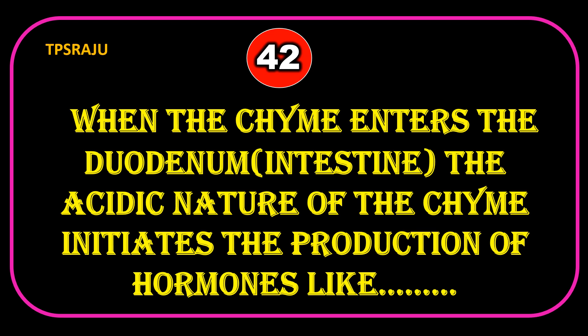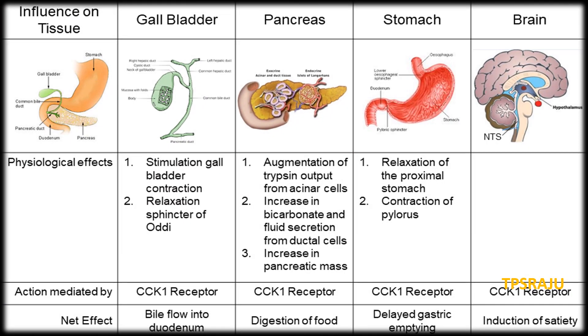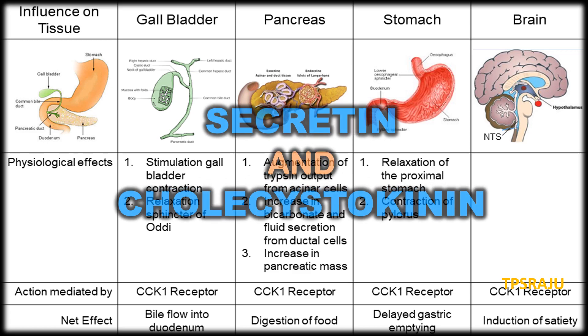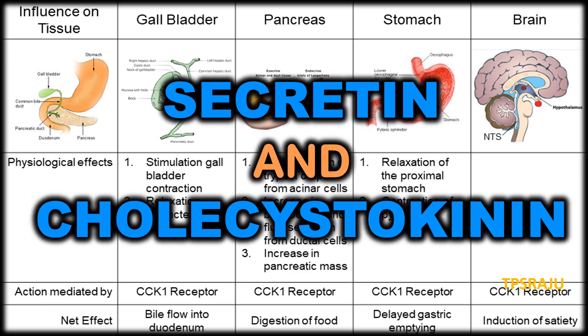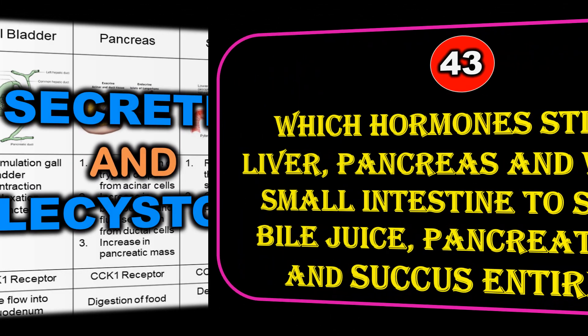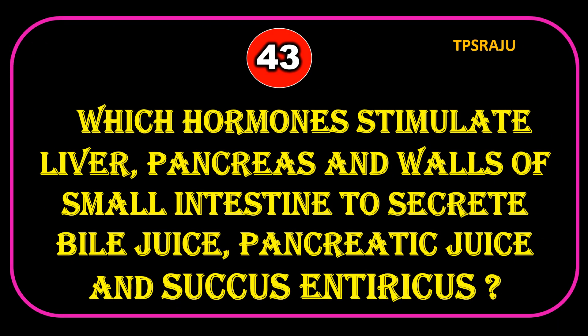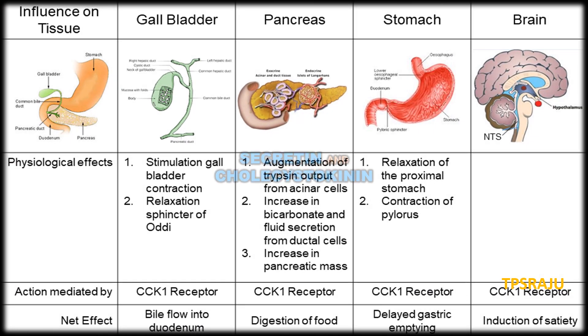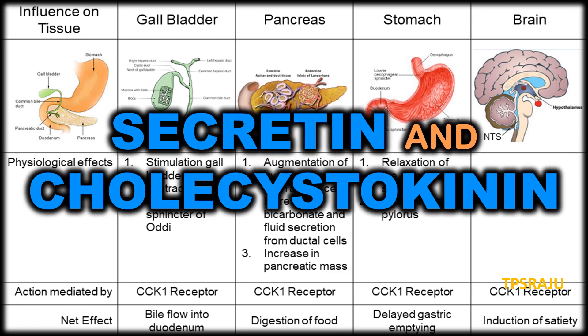Which part of the digestive system acts as the mixer and digester? The stomach. It initiates the production of hormones like secretin and cholecystokinin. These hormones stimulate the liver, pancreas, and walls of the small intestine to secrete bile juice, pancreatic juice, and succus entericus.